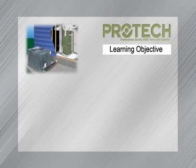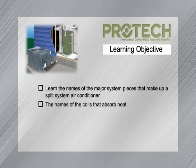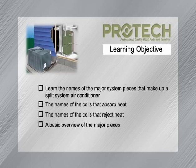In this film clip, we're going to learn about the major pieces that make up a central air conditioning system. We're going to learn the names of the coils that absorb heat and the names of the coils that reject heat. We're going to give you a basic overview of the major pieces, not the major components.